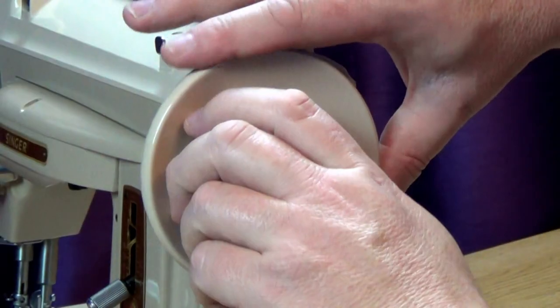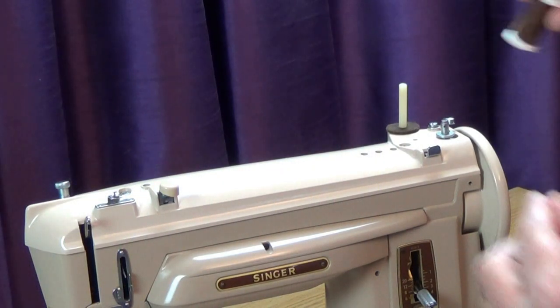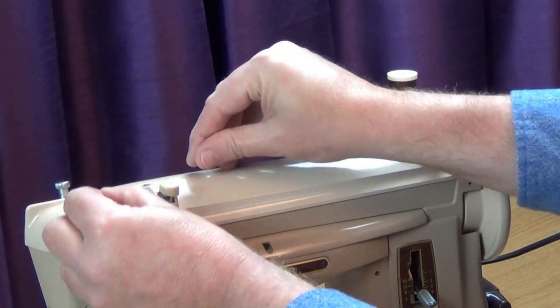To wind a bobbin, release the stop-motion knob. Place a spool of thread on the spool pin and bring the thread around the guide with a plastic cap.